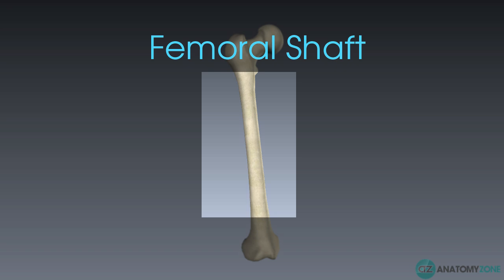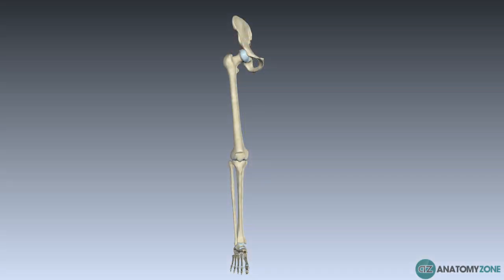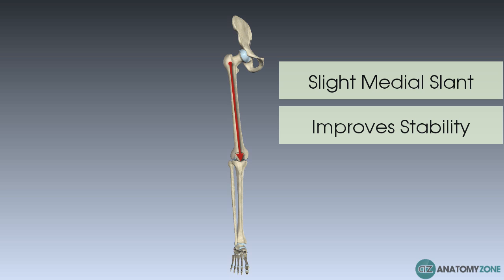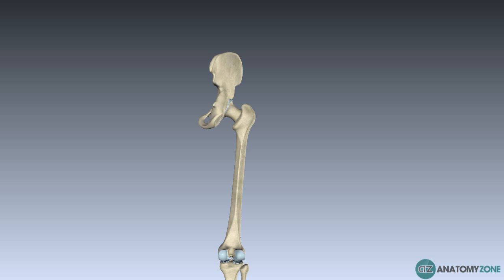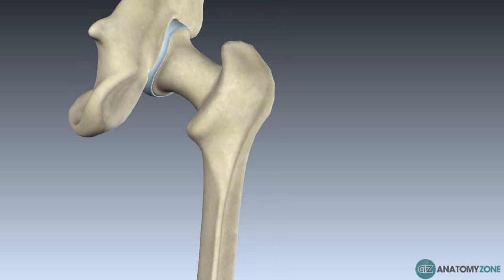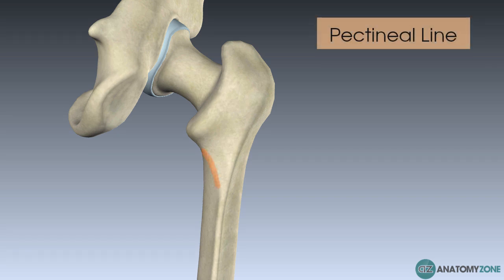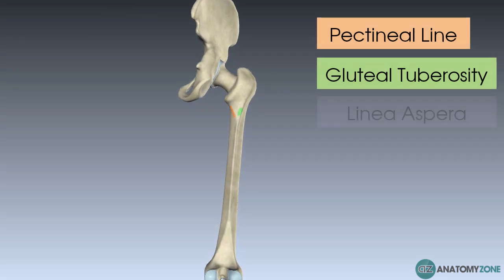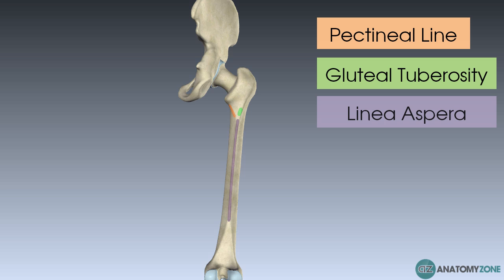Now let's take a look at the shaft of the femur. The first thing to notice is the slight medial direction of the femoral shaft — it moves towards the knee to bring your lower limb closer to the centre of your body, improving stability. On the shaft, the pectineal line is for the pectineus muscle, and next to that is the gluteal tuberosity, the attachment point for gluteus maximus. These two converge to form the linea aspera, the ridge running down the posterior femur that serves as an attachment site for the hamstring muscles.